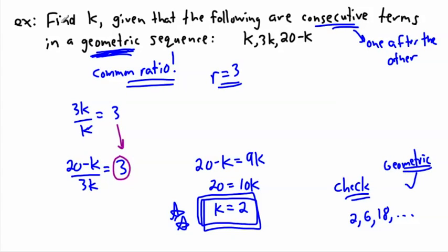So you see how we can deal with a really tough looking question by just remembering the definition of geometric. Geometric means common ratio, which means one term divided by the term before it will always be the same. So every next term divided by the term before it will always be the same number.